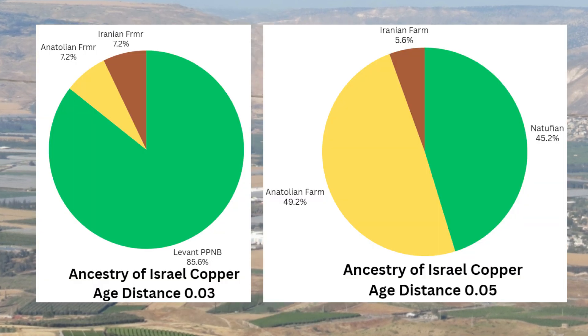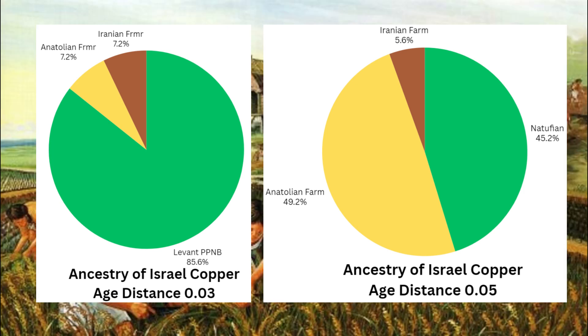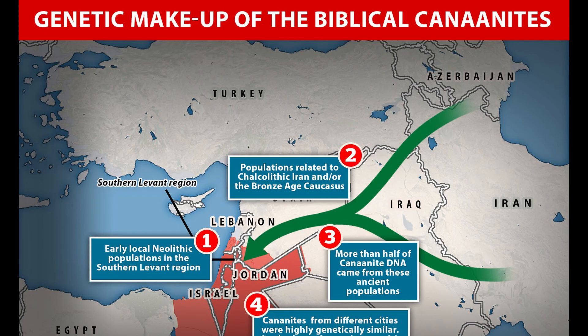Over time, this region saw waves of migration and interaction with neighboring populations, including farmers from Anatolia and Iran, which contributed to the genetic and cultural makeup of the Chalcolithic inhabitants of Israel. This period also laid the foundation for the later Bronze Age cultures of the Levant, such as the Canaanites. The synthesis of local Levantine traditions with influences from Anatolia and Iran helped shape the early urban societies that would eventually become the ancient Canaanite civilization, known for its vibrant culture and strategic position at the crossroads of the ancient Near East.